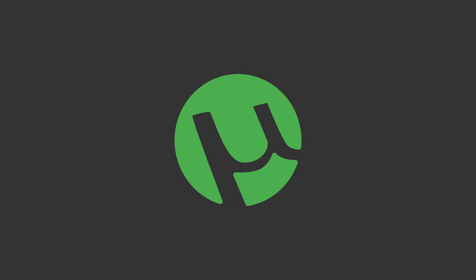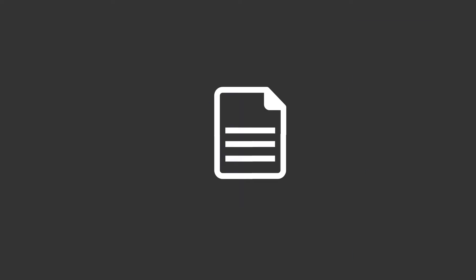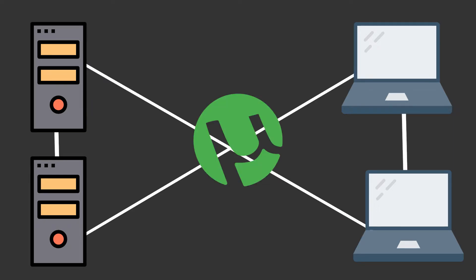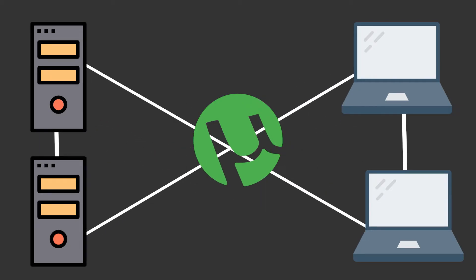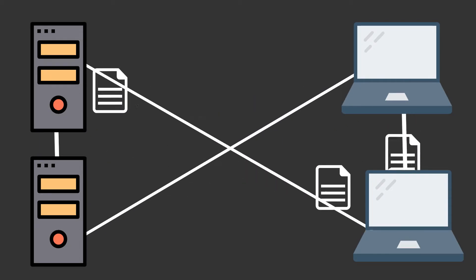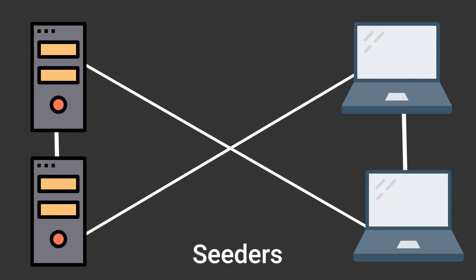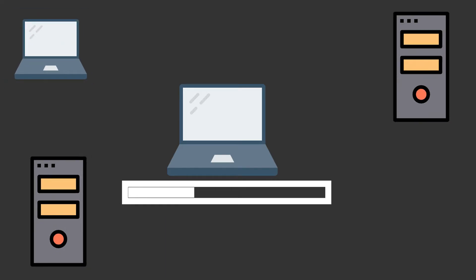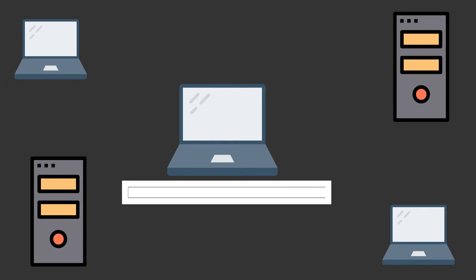When you download a file using torrent, it's a totally different story. It uses a peer-to-peer protocol, so there is no central server. Instead, the file is distributed into small pieces across different users at different locations. Everyone who is downloading the file, or has completed their download, is actually contributing to sharing the file with others — they are known as seeders. When the process starts with one seed, downloading speed can be relatively slow, but as more users join and contribute, the speed gets significantly higher because pieces can be fetched from different locations without putting pressure on one seed.